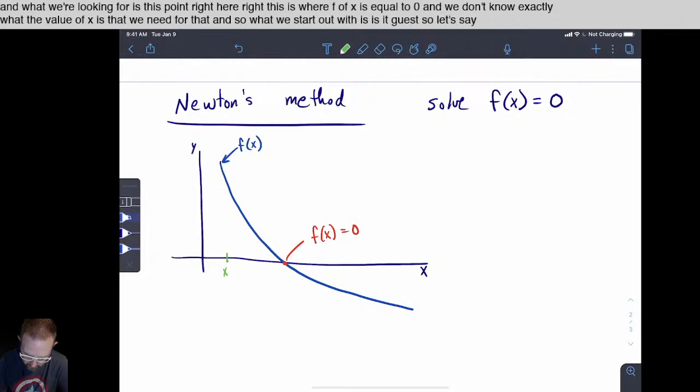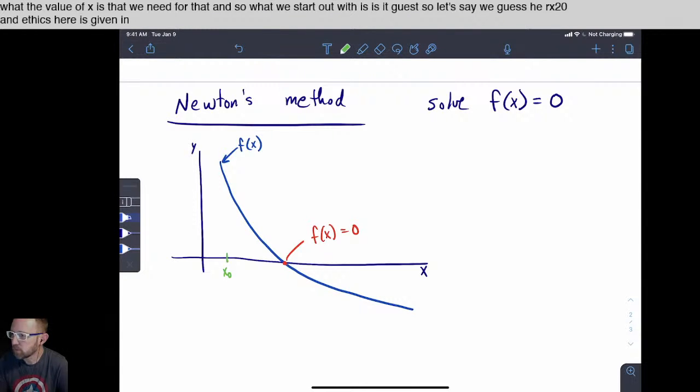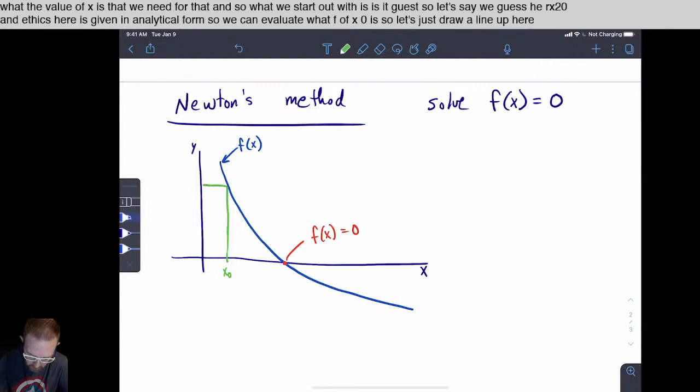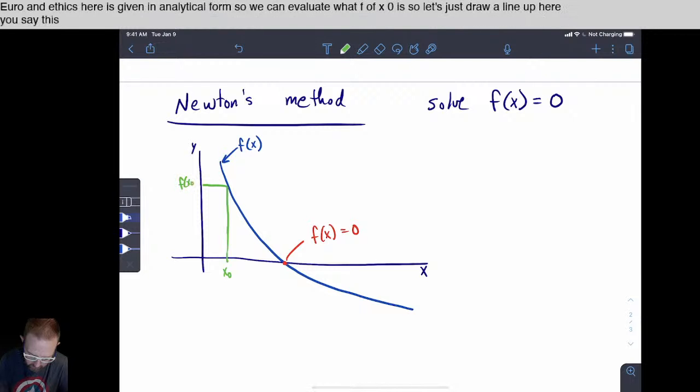And so what we start out with is a guess. So let's say we guess here x is zero. And f of x here is given in analytical form. So we can evaluate what f of x zero is. So let's just draw a line up here and say this is f of x zero.